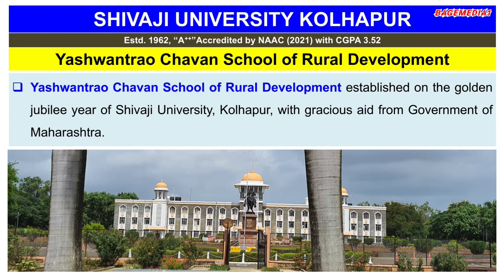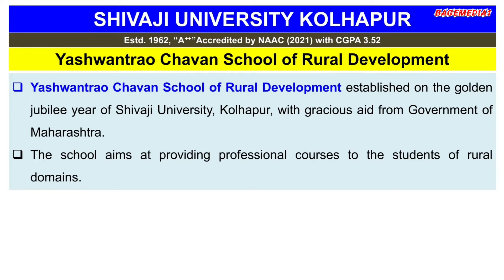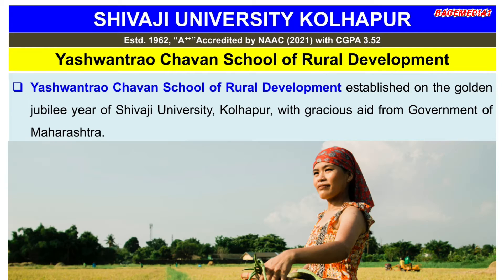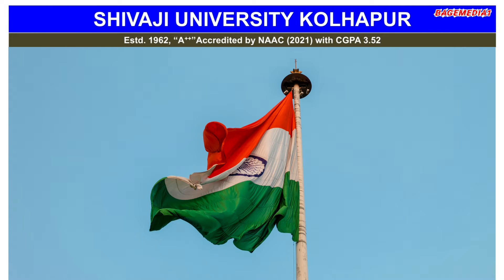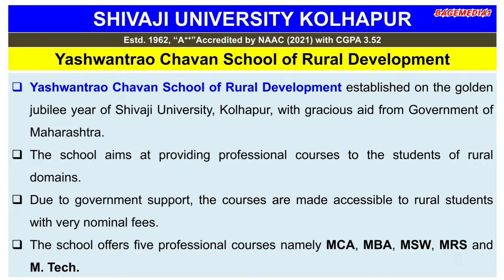A Shwantrao Chavan School of Rural Development was established on the golden jubilee year of Shivaji University, Kolhapur, with gracious aid from the government of Maharashtra. The school aims at providing professional courses to the students of rural domains. Due to government support, the courses are made accessible to rural students with very nominal fees.